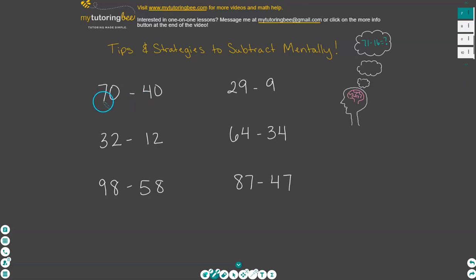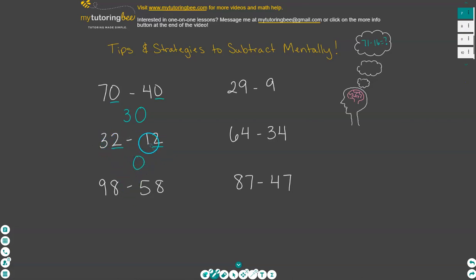Let's start with this first one here, 70 minus 40. You'll notice that in the ones place in both of these numbers, they're both the same. So that ones place is going to be zero. In our tens place, that's really all we have to worry about to subtract. How much is seven tens minus four tens? The difference between seven and four is three, so we wind up with an answer of 30. Now, 32 minus 12 — again, the ones place is the same, so two minus two equals zero. And then three minus one gives us two, so we wind up with 20.